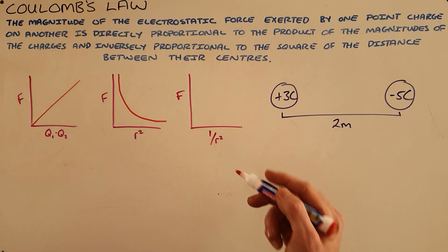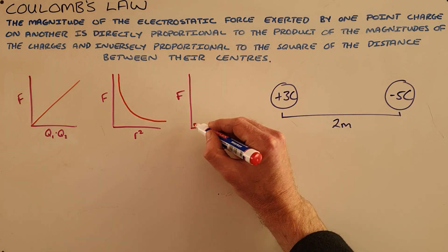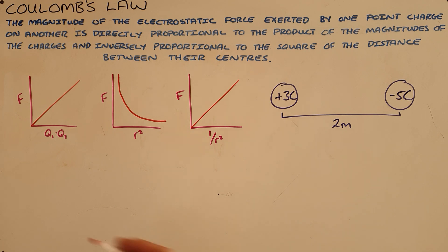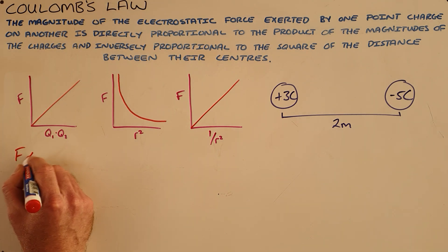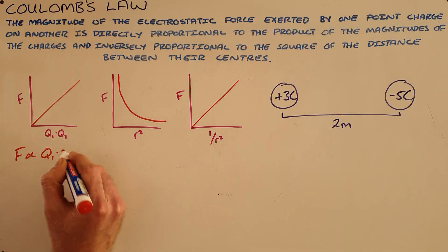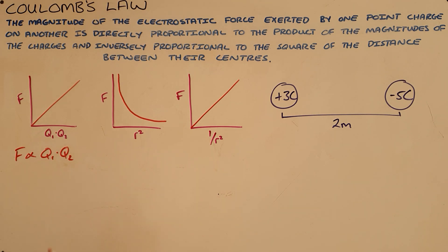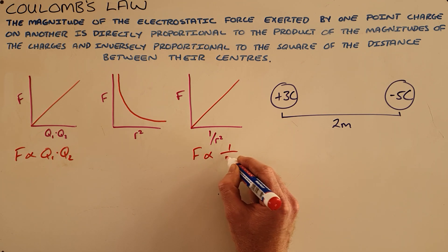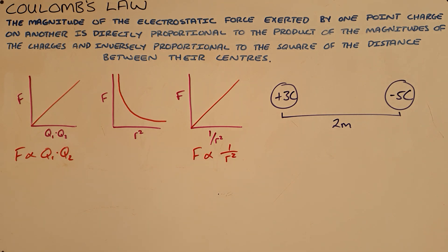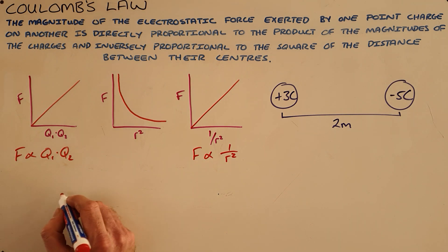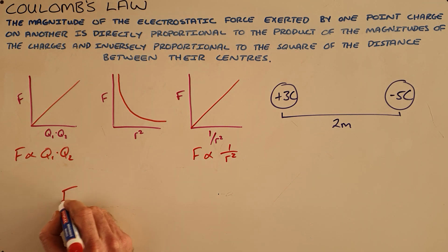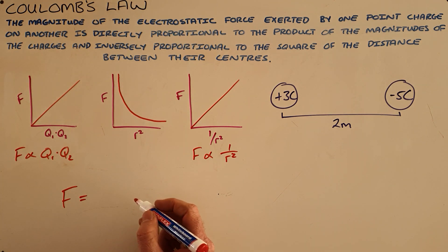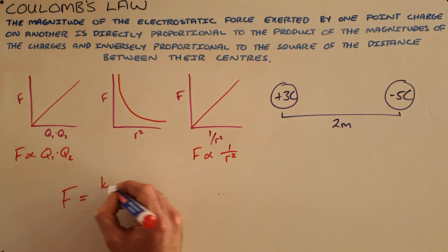What's called the inverse square law describes the relationship between force and one over the distance between their centers squared, and we see that that is a direct proportion. These graphs can also be written as: force is directly proportional to the product of the magnitude of the charges, and also directly proportional to one over the distance squared. To convert that into Coulomb's law equation, all we need to do is add a constant K.